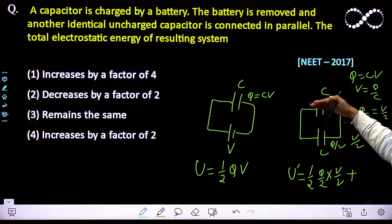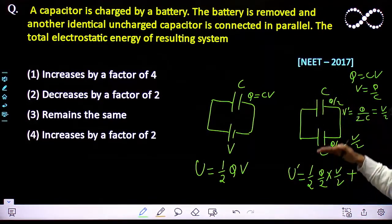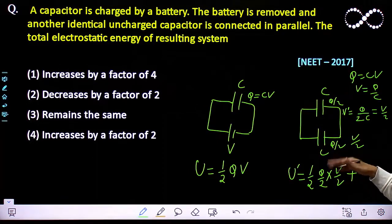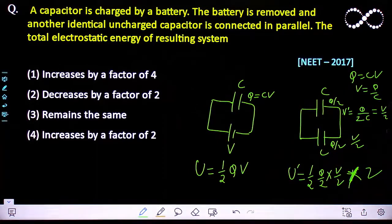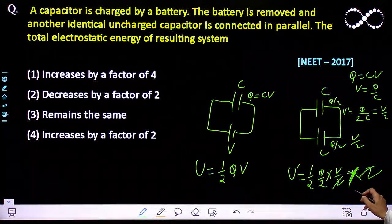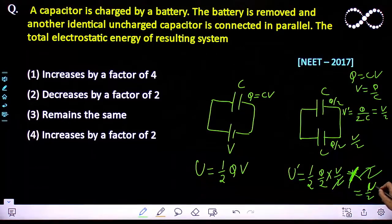Plus, this is the energy of this capacitance, so the energy of this capacitance would also be similar. So you can multiply it by 2. The 2s will cancel out. So it would be half times the initial energy.